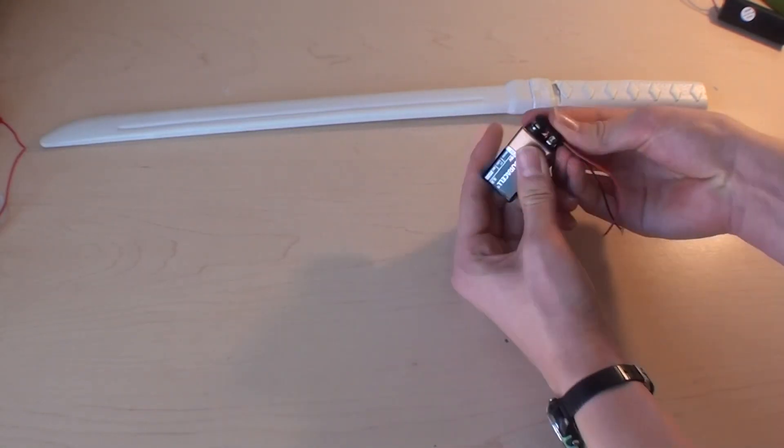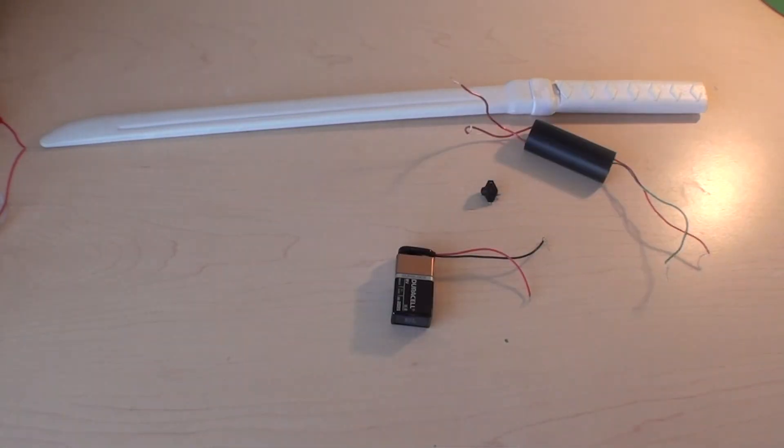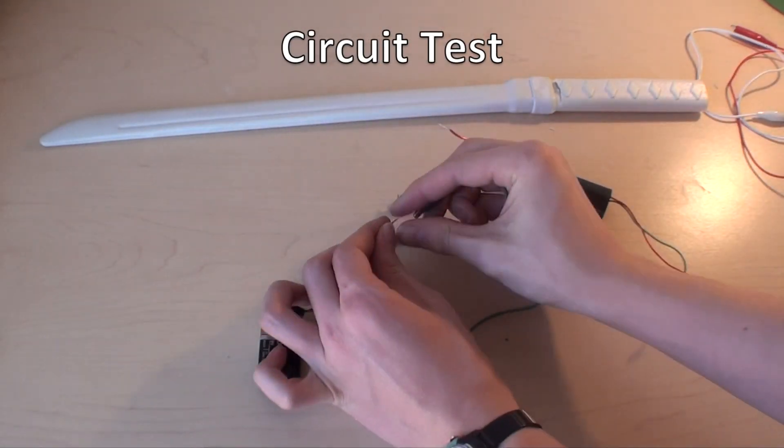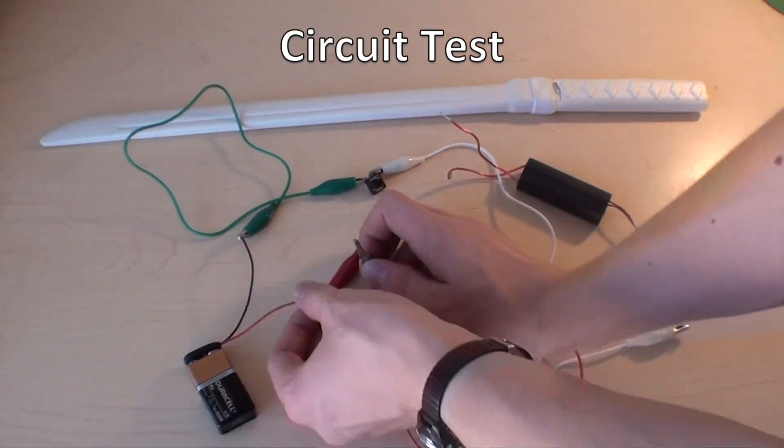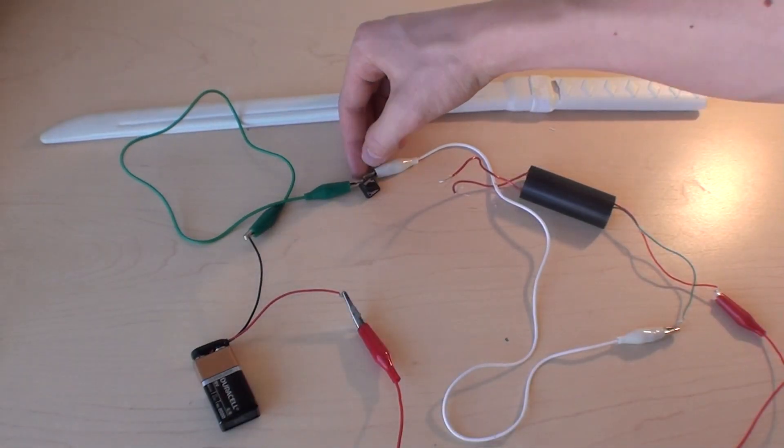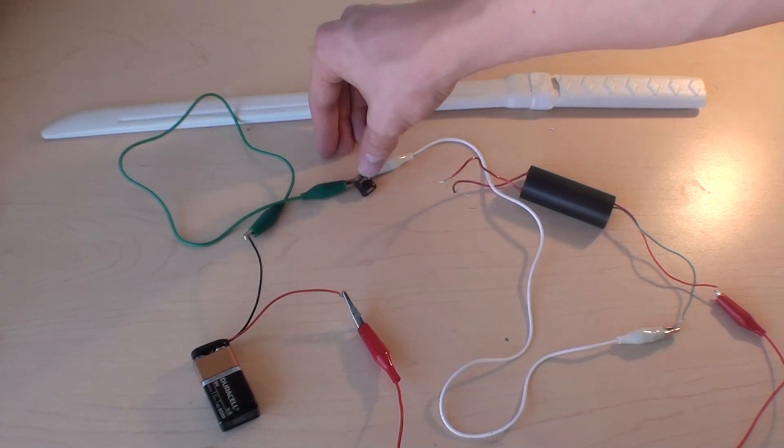The circuit for this project is really simple. I have the positive lead of a 9 volt battery connected to the positive input wire of the transformer. The negative wire for the battery is connected to a switch, and that's hooked up to the negative input wire of the transformer. The high voltage output wires will be connected to the blade.